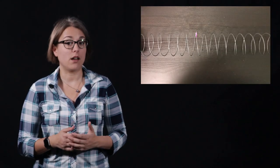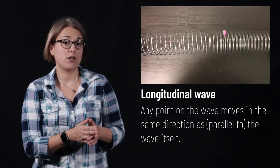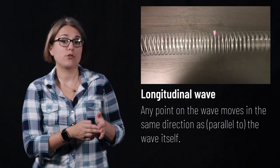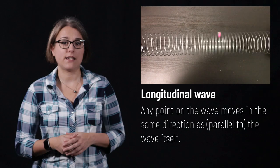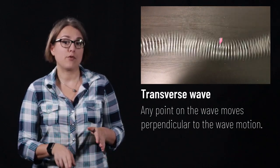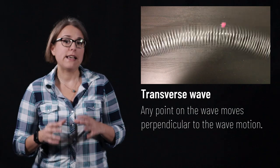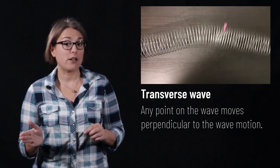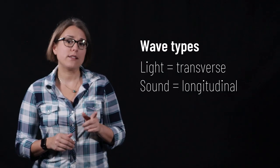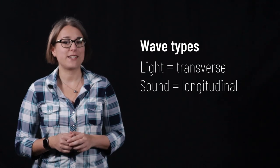Waves tend to be characterized by the motion that the wave itself makes compared to how the wave travels through space. In these videos, I use a slinky to create longitudinal and transverse waves. In a longitudinal wave, the vibrations of the wave travel in the same direction as the wave itself. When I send a longitudinal pulse through the slinky, the pulse travels from left to right, as does any single point on the slinky — I put a piece of pink tape on one point to show this more clearly. In a transverse wave, the vibrations of the wave travel perpendicular to the direction of the wave; any single point on the slinky moves up and down, but the wave itself moves left to right. Light waves are transverse, and sound waves are longitudinal.